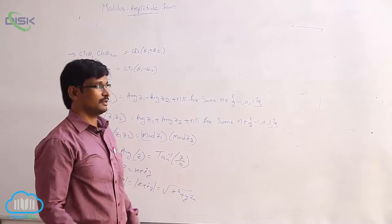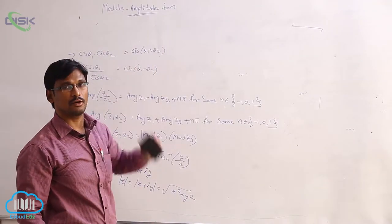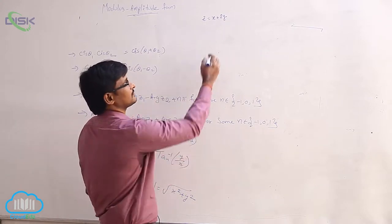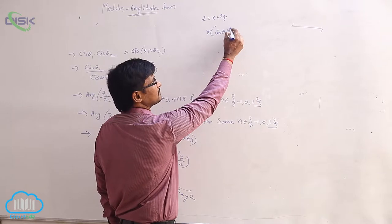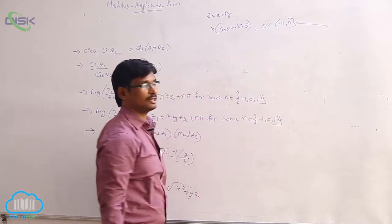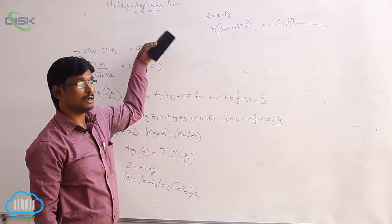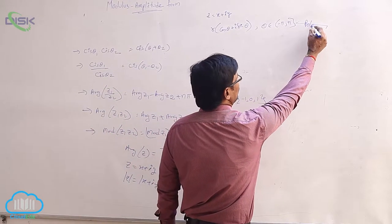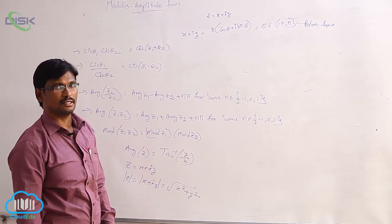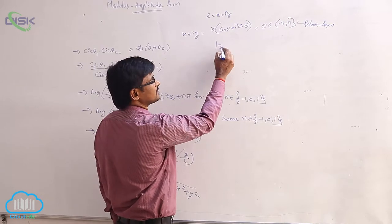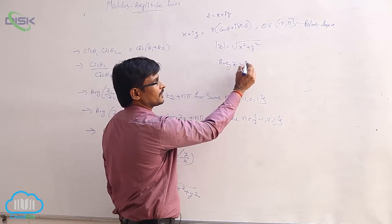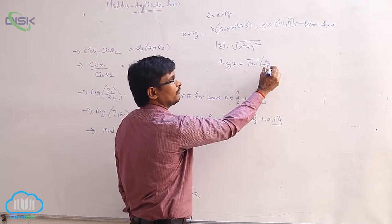We will see the modulus amplitude form of a complex number. If z = x + iy, then the modulus amplitude form is r(cos θ + i sin θ), where θ ∈ (−π, π]. This is the polar form of z, where |z| = √(x² + y²) and arg(z) = tan⁻¹(y/x).